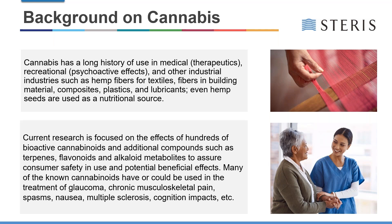Current research in cannabis is focused on the effects of hundreds of bioactive cannabinoids and additional compounds such as terpenes, flavonoids, and alkaline metabolites that are in cannabis, to assure consumer safety and that the potential beneficial effects are maintained. Many of the known cannabinoids have been or could be used and are being researched in the treatment of glaucoma, chronic musculoskeletal pain, different kinds of spasms, nausea, multiple sclerosis, and cognition impacts.